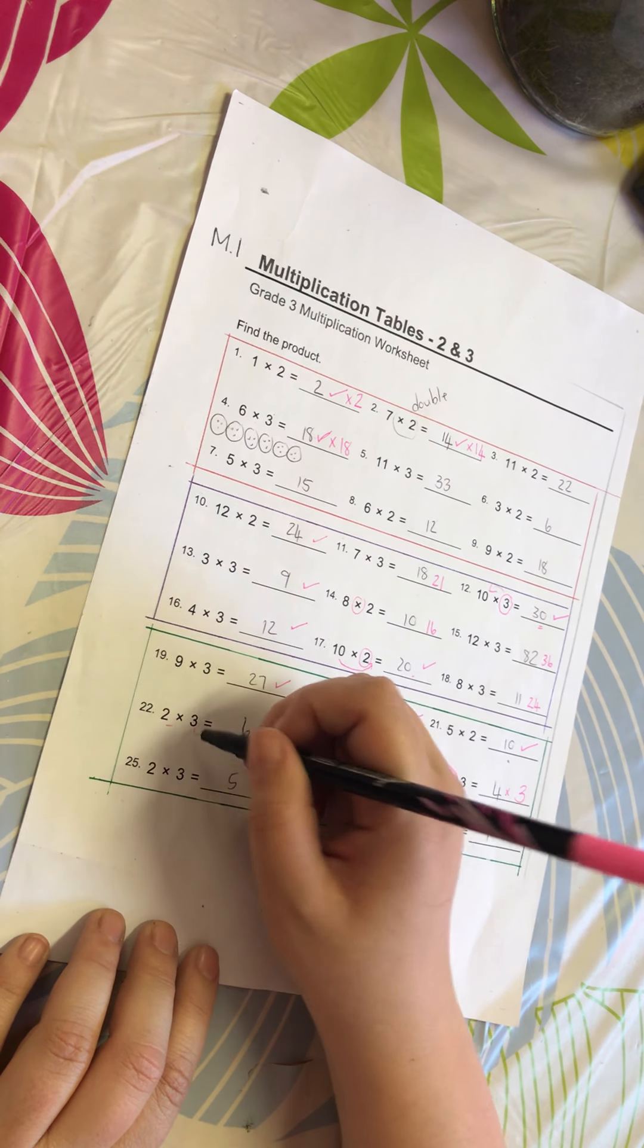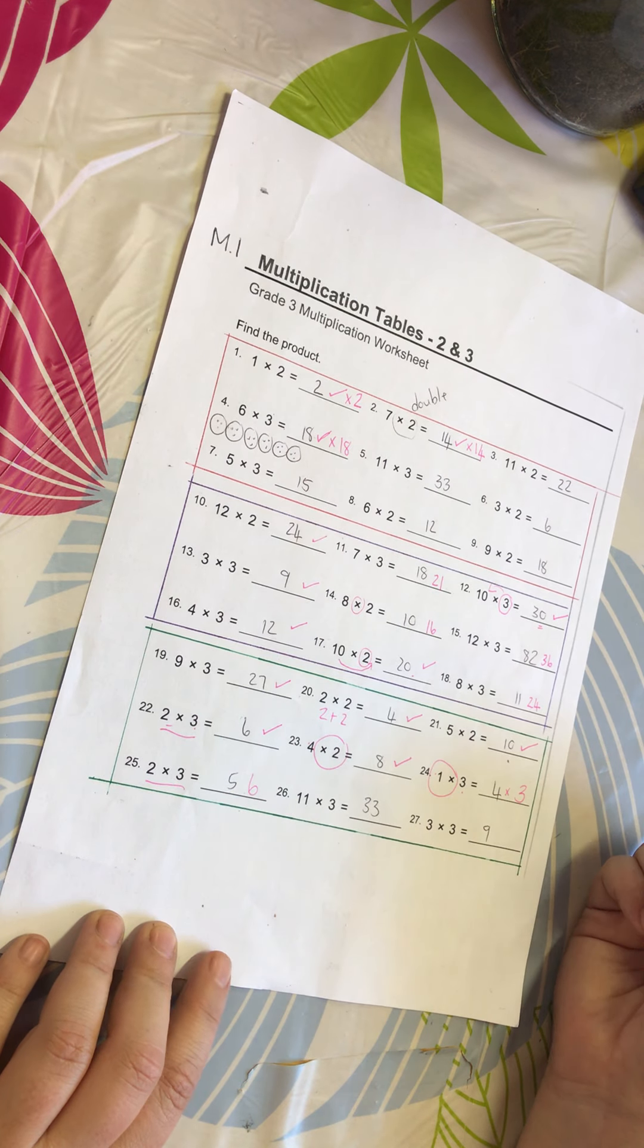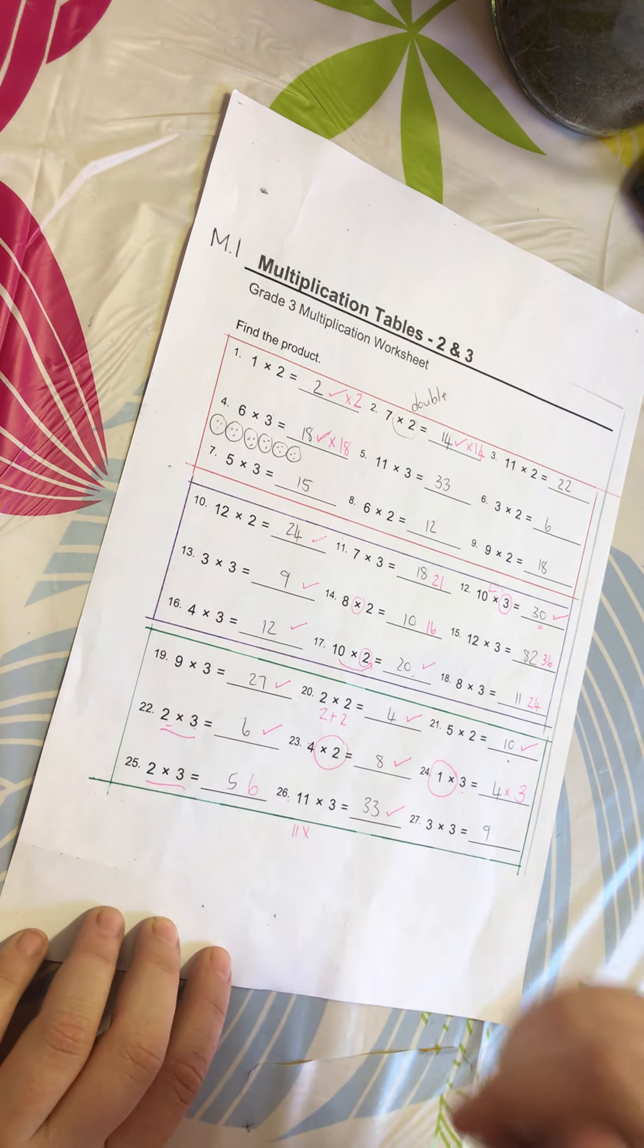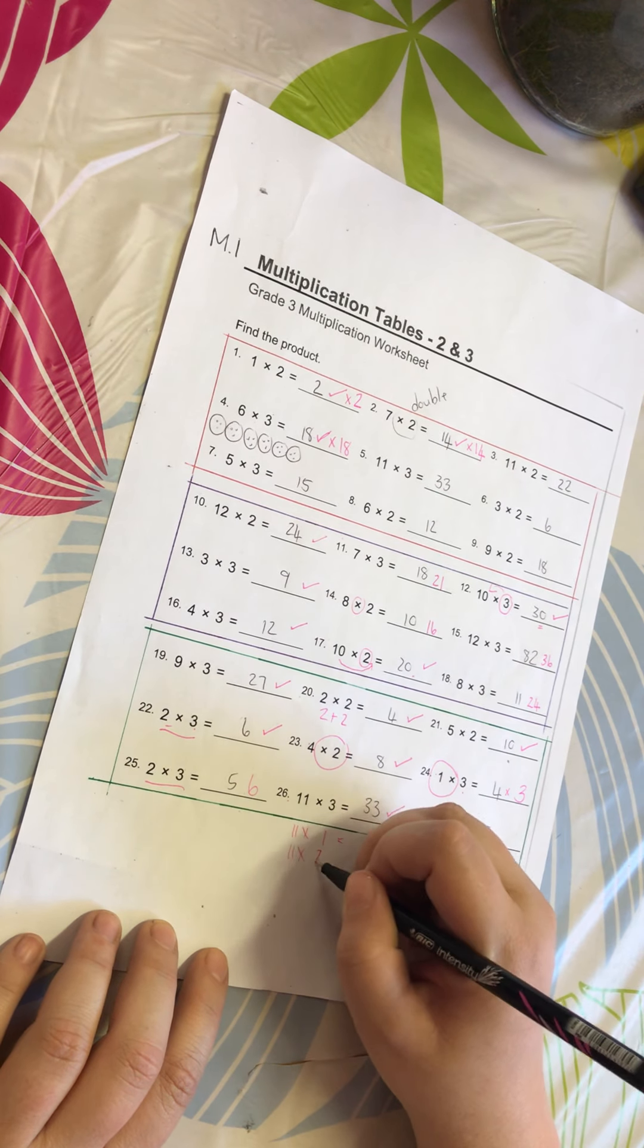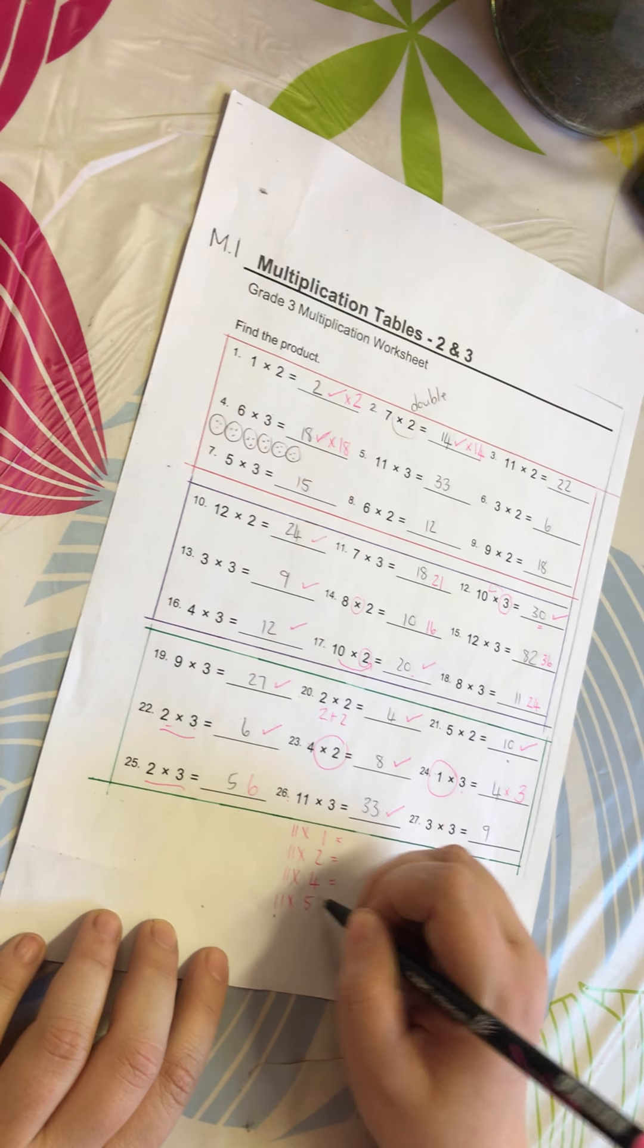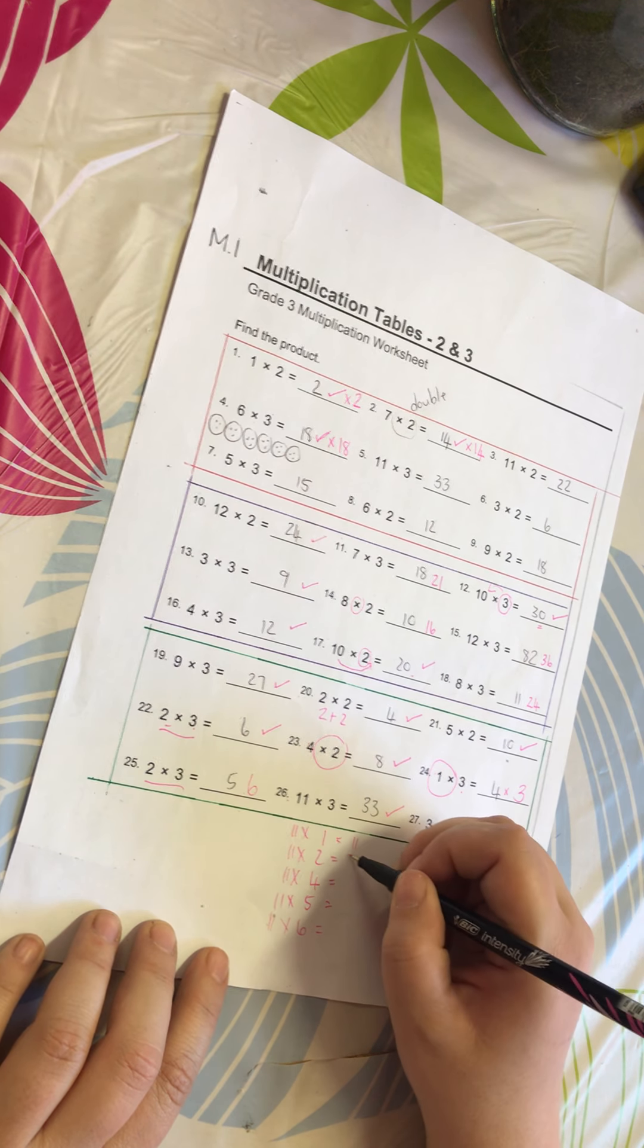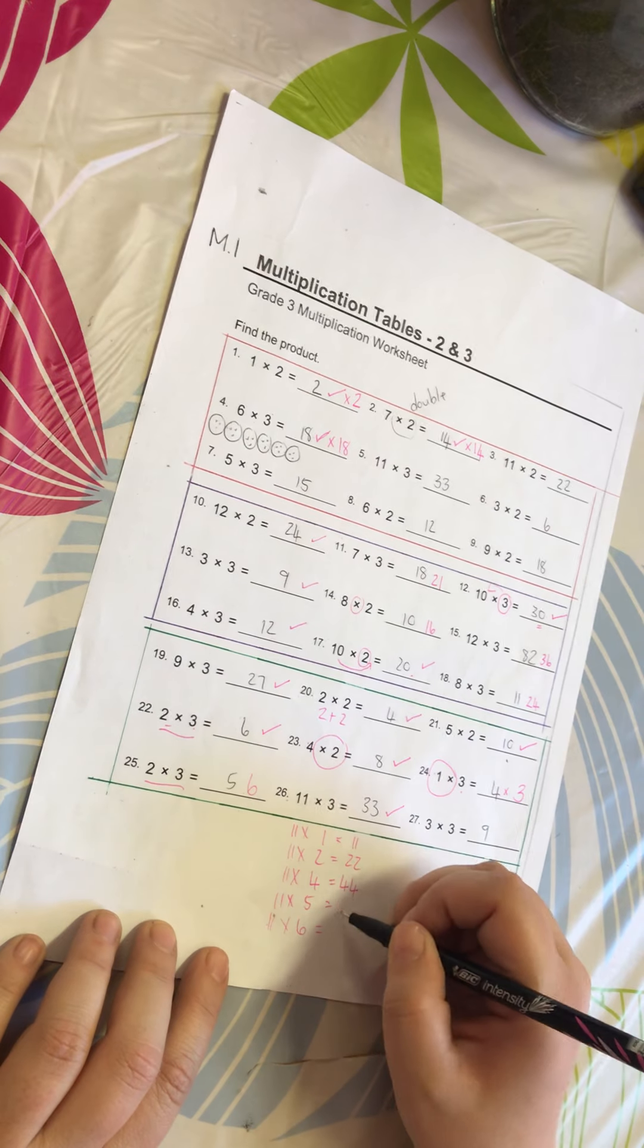Number 26: 11 times 3 is 33. You will still find out any single digit number, that means any one digit number timesed with 11, is going to give me that number two times. I'm going to show you now: 11 times 1, 11. 11 times 2, 22. 11 times 4, 44. 11 times 5, 55.